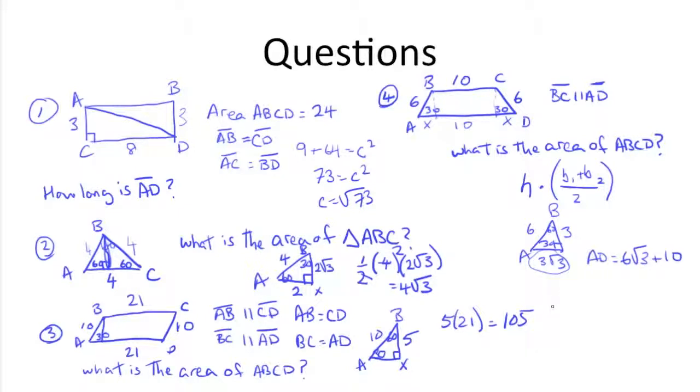So since that's the case, let's put this together. Height is 3 times base 1 of 10 plus base 2, 6 root 3 plus 10, all divided by 2. We get 3 times 10 plus 10 plus 6 root 3, divided by 2. We can simplify here. Divide the top by 2, and we get 3 times 10 plus 3 root 3, which is the equivalent of 30 plus 9 root 3, and that's the area.